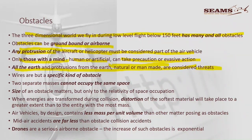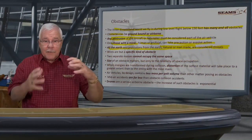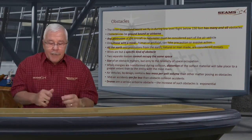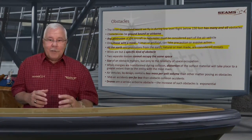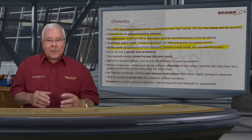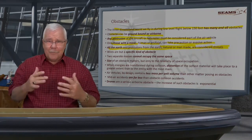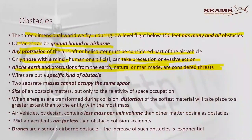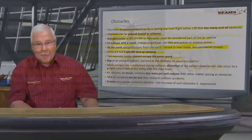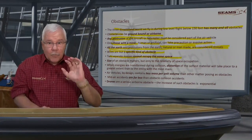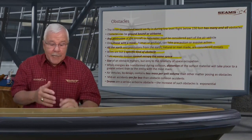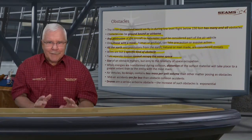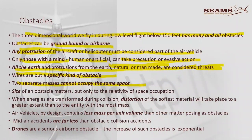All earth protrusions, natural or man-made, are considered threats. Anything attached to mother earth — whether it's a mountain, a tree, a mast, or a pylon — is an obstacle. Wires are just a specific kind. The key principle is that two separate masses cannot occupy the same space. Those objects are already in place, already occupying the space. It is you who comes afterwards trying to occupy the same space — and that is scientifically not possible.